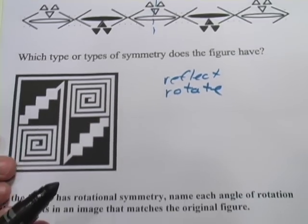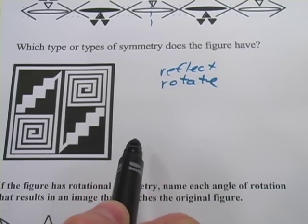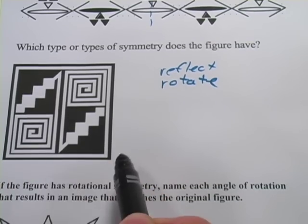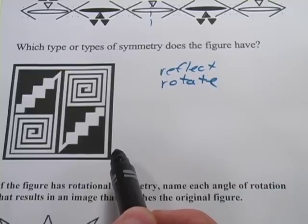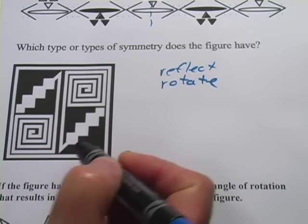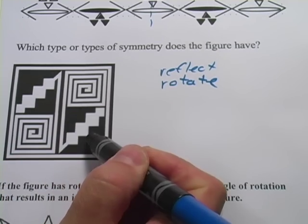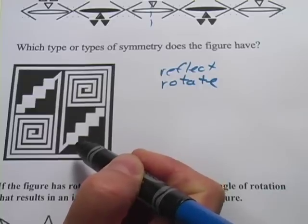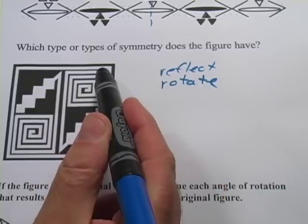Let's look at another one. This one says which type or types of symmetry does the figure have? And we've got this complicated figure down here, and this one is a little tricky. You might know that if you drew a line here and reflected it, that wouldn't match up because this would go down here and these don't match. But you might think to yourself, what about a diagonal line?